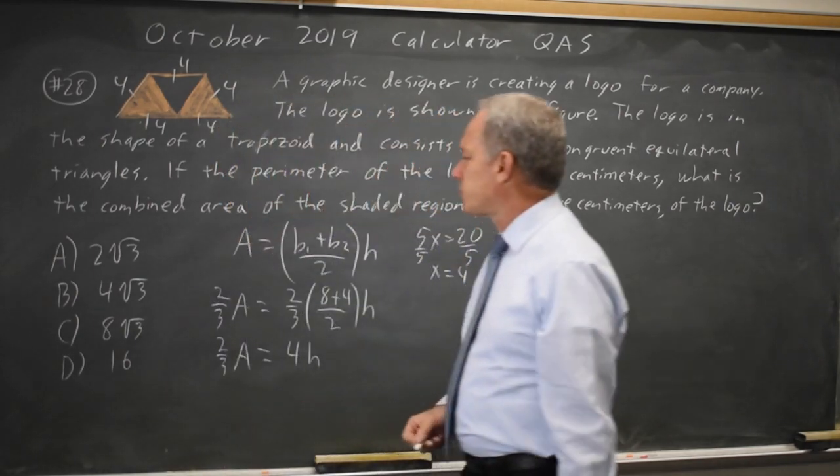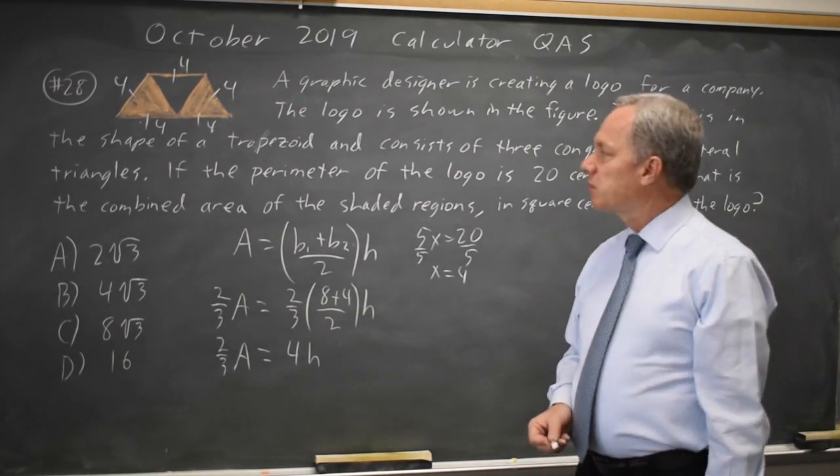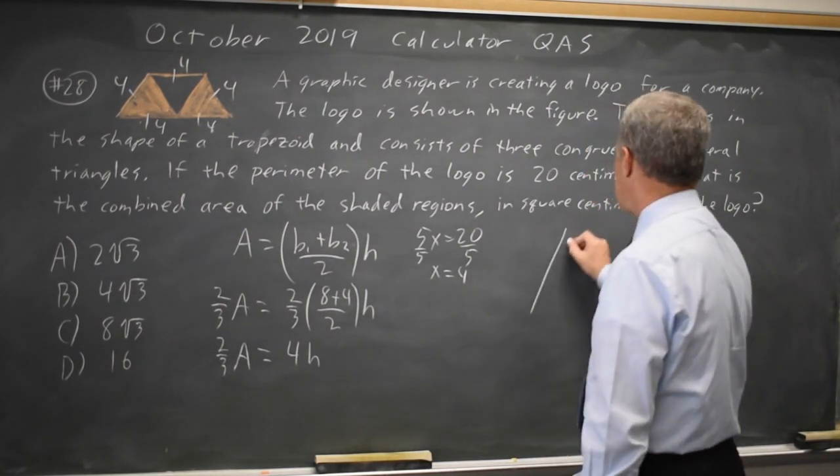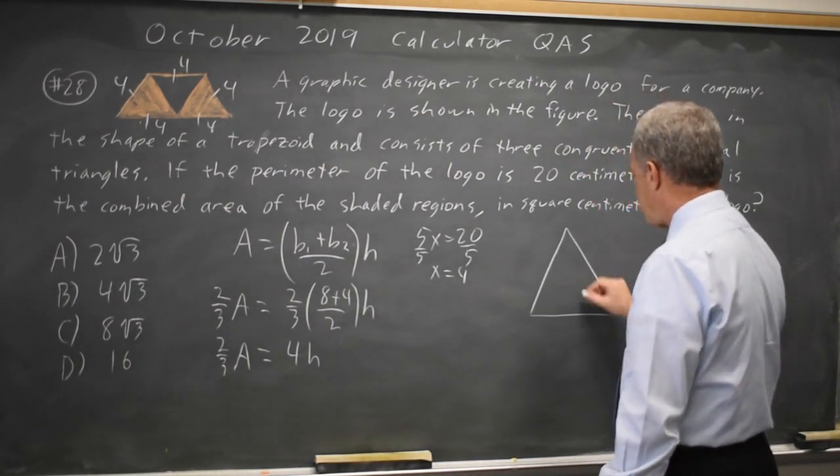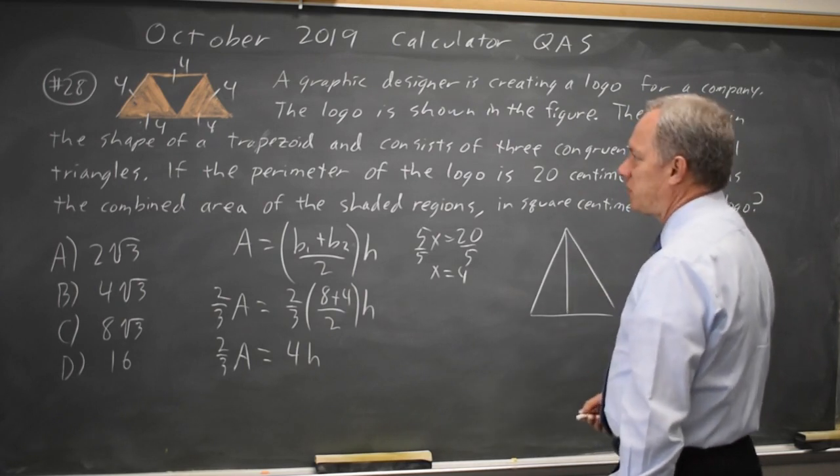So 4 times the height is 2 thirds of the area, which is the quantity they're asking us to find. So I need to find the height of an equilateral triangle. Not very equilateral, but it'll do.